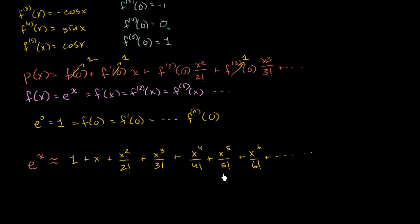And something pretty neat is starting to emerge. That e to the x, this is just really cool, can be approximated by 1 plus x plus x squared over 2 factorial plus x to the third over 3 factorial. Once again, e to the x is starting to look like a pretty cool thing. This also leads to other interesting results.